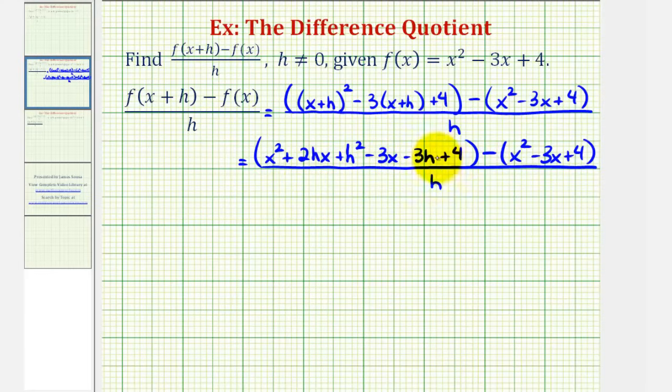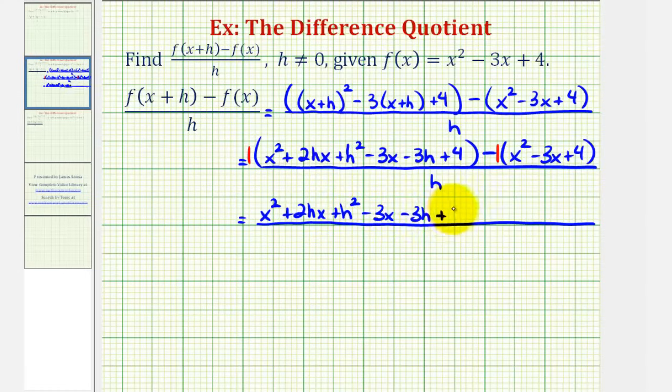Now we'll drop the parentheses in the numerator and combine like terms. So if it's helpful, we can think of distributing a positive one here, which won't change anything, but because of the subtraction, we can think of distributing a negative one if that's helpful. For the first part, we would just have x squared plus two hx plus h squared minus three x minus three h plus four. Notice nothing changed.